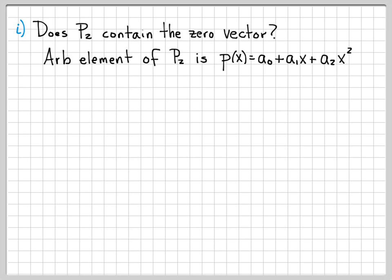So first, let's go ahead and write out what an arbitrary element of P2 looks like. In general, an arbitrary element of P2 looks like this: it can go up to degree 2 because we're working in P2. And all these coefficients, a₀, a₁, and a₂, can be completely general and arbitrary.